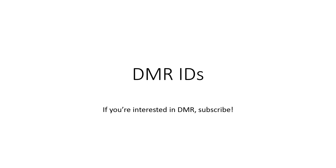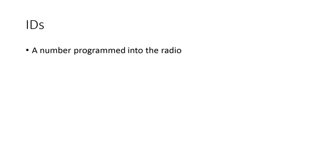Welcome to another video. Today we're going to be talking about DMR IDs. A DMR ID is a number programmed into your DMR radio, and you can think of it like a phone number — every phone has to have an individual number so that people can call it.